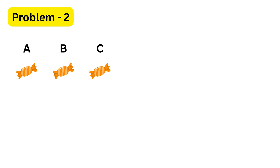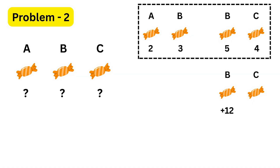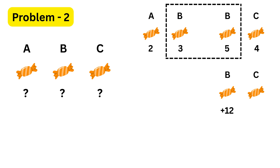Next question. We are told that A, B, and C share some chocolates. The ratio of the number of chocolates A gets to the number B gets is two to three, and the ratio of the number B gets to the number C gets is five to four. We are also told that B gets twelve more chocolates than C. We need to find how many chocolates each person gets. Let's first focus on combining the two ratios. In both ratios, B appears, so B is our link, and we must make the B parts the same.